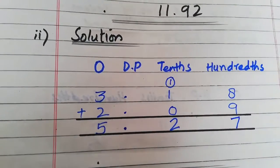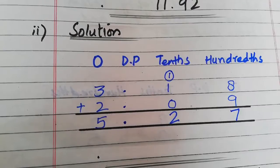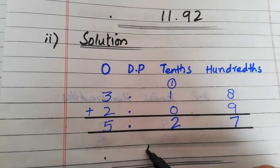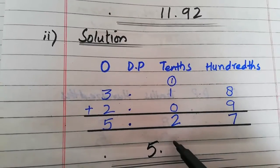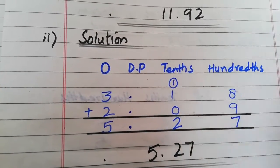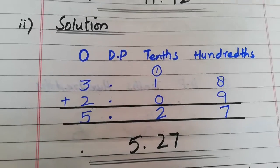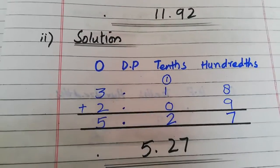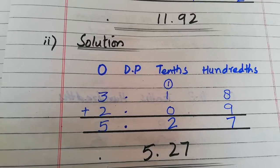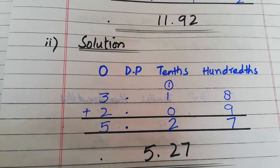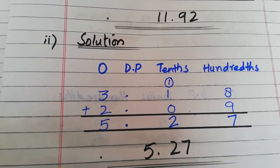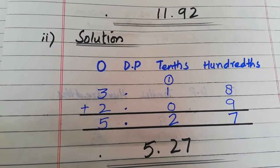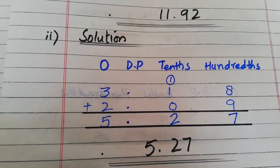So the answer is five point two seven۔ ہم answer یہاں پہ repeat کر لیں گے: five point two seven۔ یہ ہمارے پاس part two ہے۔ Part two کا answer ہے five point two seven۔ Question: three point one eight plus two point zero nine, so the answer is five point two seven.